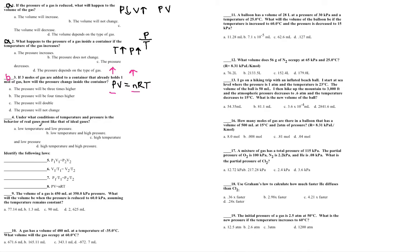Under what conditions of temperature and pressure is the behavior of real gases most like that of ideal gases? It's high temperature and low pressure. Real gases are actually attracted to each other; ideal gases are assumed not to be. So for real gases to act like ideal gases, the best conditions are low pressure and high temperature, because they are least attracted to each other in those conditions.